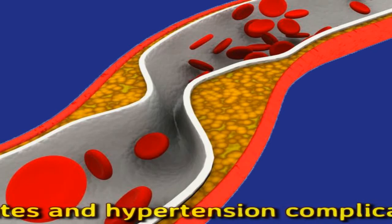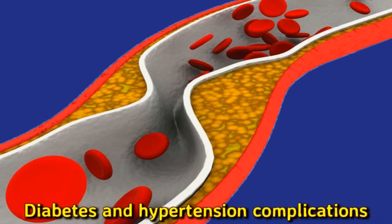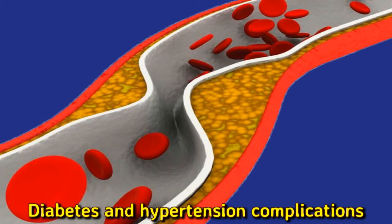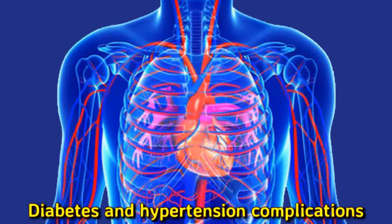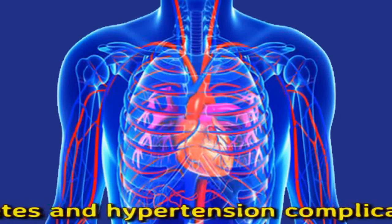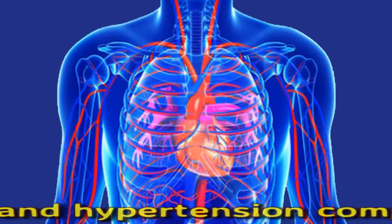Hypertension and type 2 diabetes share similar risk factors, including being overweight or having obesity, having a sedentary lifestyle, following an unhealthy diet, experiencing chronic stress, having poor sleep habits, smoking tobacco, and being exposed to air pollution. Additional risk factors for hypertension include a diet high in sodium, low levels of potassium, and high alcohol consumption. A family history of hypertension increases the risk, suggesting a role for both genetic and environmental factors. A close family history of diabetes also increases the risk of both type 1 and type 2 diabetes. Having hypertension appears to increase the risk of type 2 diabetes, and having diabetes increases the risk of hypertension.